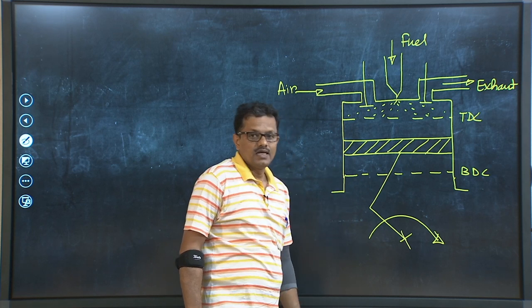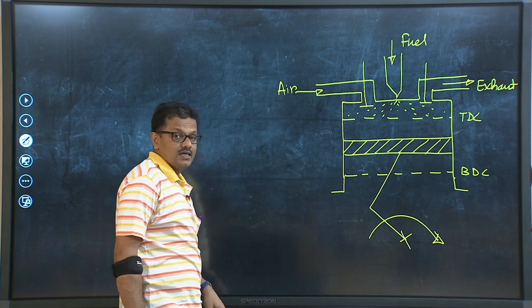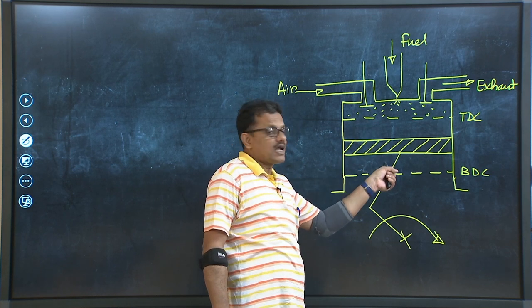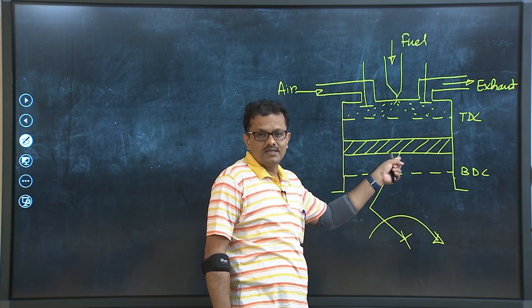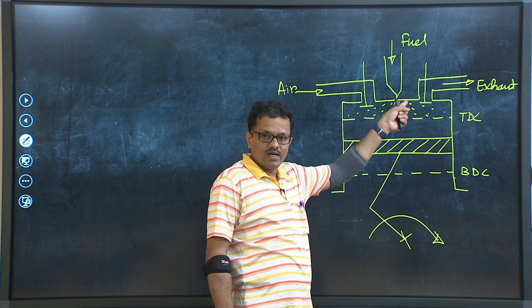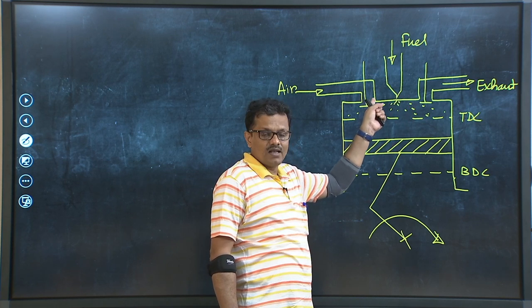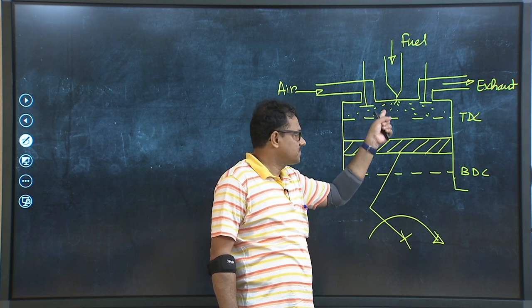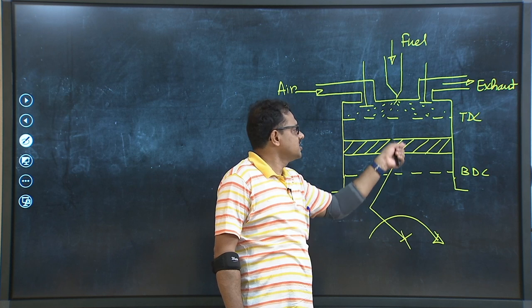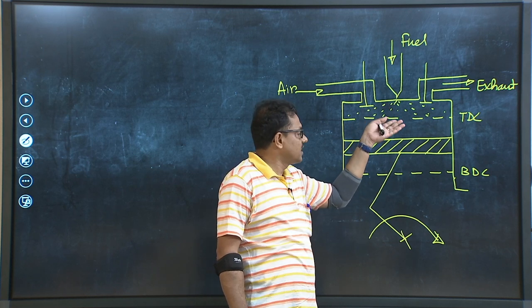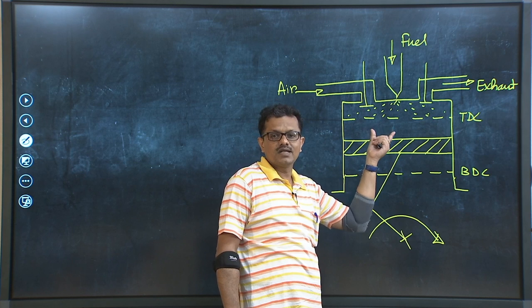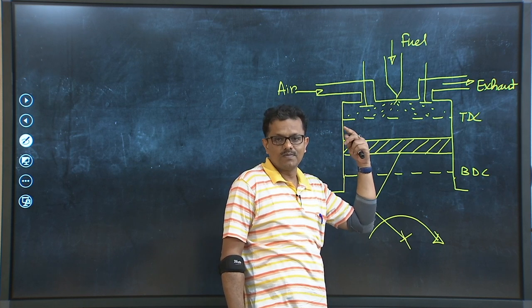The next stroke is the compression stroke. When the piston is at BDC at the end of the intake stroke, the exhaust valve is already closed. The intake valve is now closed and the piston travels from BDC to TDC, and the air which was drawn into the cylinder during the intake stroke is now getting compressed. That is the compression stroke.